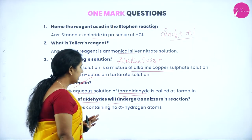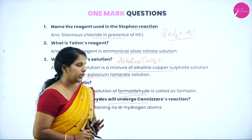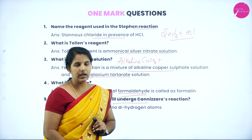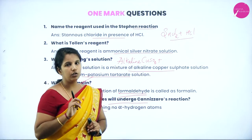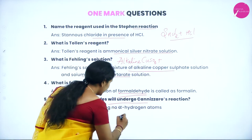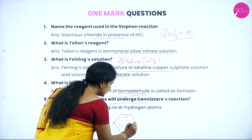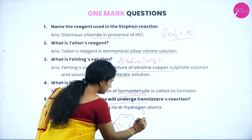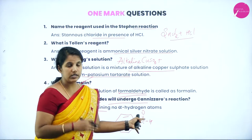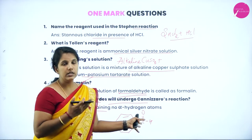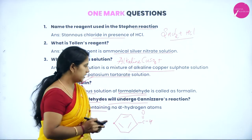Which type of aldehyde will undergo Cannizzaro reaction? For the Cannizzaro reaction, the aldehyde that does not contain an alpha hydrogen atom will undergo this kind of reaction. For example, benzaldehyde — in benzaldehyde there is no alpha hydrogen atom at all, so such compounds will undergo the Cannizzaro reaction.